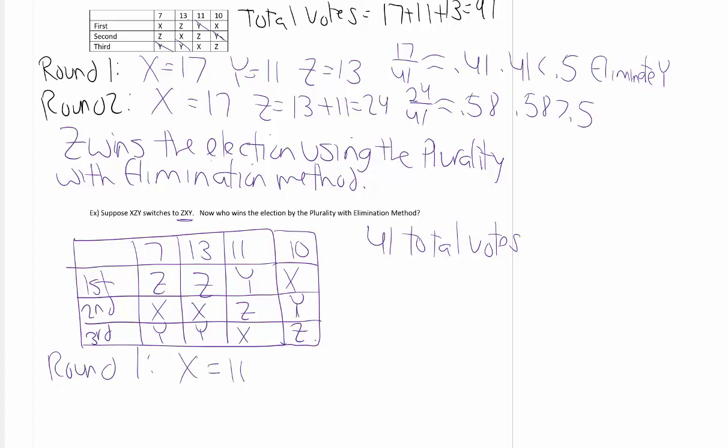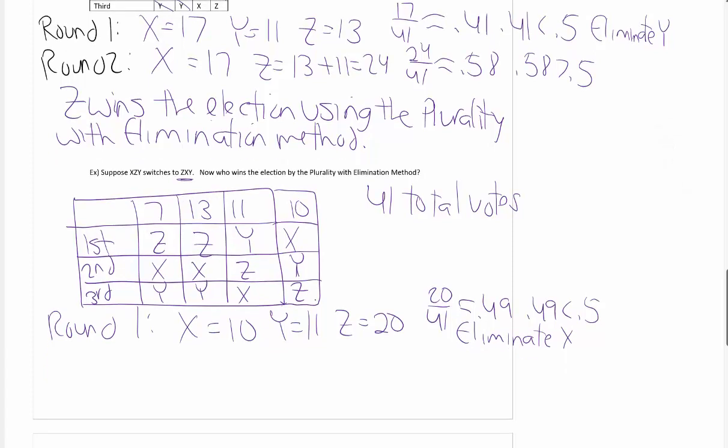X has 10 first place votes, Y has 11, and Z has 7 plus 13, that's 20. 20 divided by 41 is approximately 0.49. That's less than 0.5, so Z does not have a majority of first place votes. We're going to eliminate X because X has the least number of first place votes.